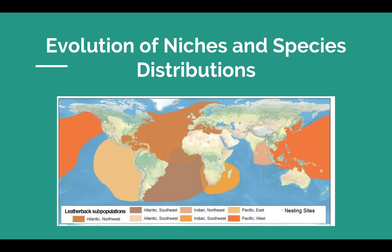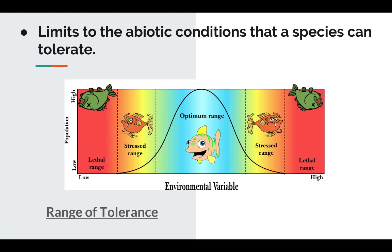We're going to close out by looking at how the evolution of niches and species determines where species are distributed around Earth. All living things have a range of tolerance — referring to abiotic factors like temperature, humidity, salinity, and pH. There's a certain range where an organism can not only survive and grow, but an optimum range where they'll be able to reproduce. There's also a stress range where the organism can survive and grow, but reproduction will not take place.